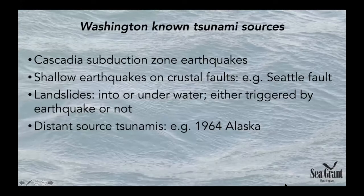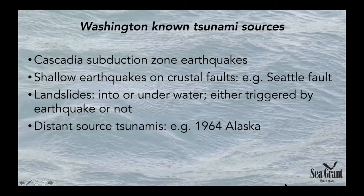In Washington we know we have several different tsunami sources. These include tsunamis generated by Cascadia subduction zone earthquakes, tsunamis that form after earthquakes on crustal faults — an example of this is the Seattle fault — tsunamis formed by landslides either into or underwater, which can be triggered by earthquakes or happen without earthquakes. We also know that we can get distant source tsunamis; an example is the 1964 Alaska earthquake tsunami, which made it all the way down the west coast of the U.S. and caused damage in many locations.